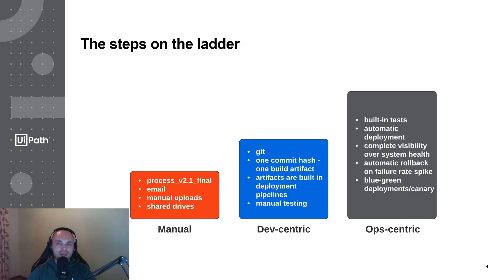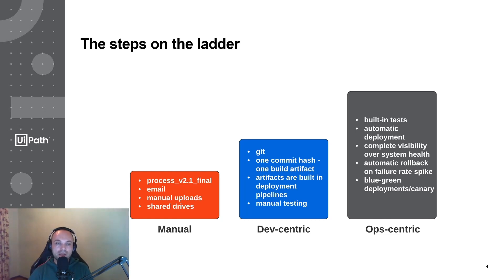Continuous integration and deployment is not an on-off switch — a package is not a mutually exclusive setup. It's more like a spectrum, more like a ladder. So normally you'd start with manual: you have some process by which a package is published to a dev orchestrator, you're happy with it, it's working, and you download it from the dev orchestrator.